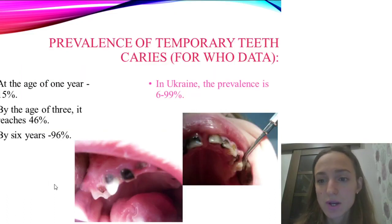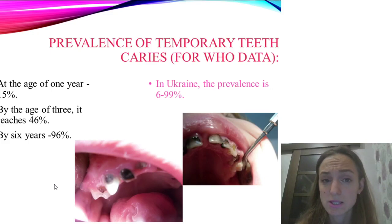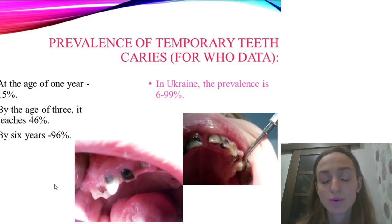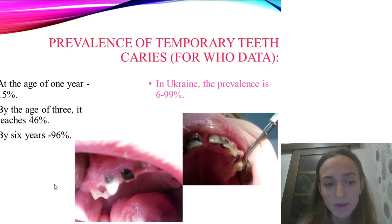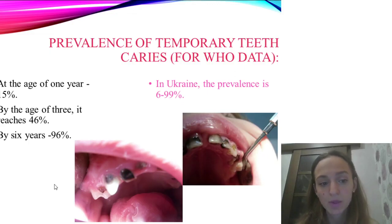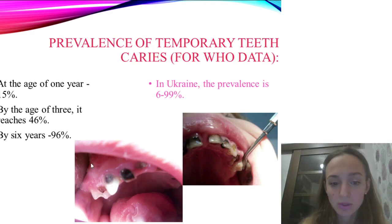The prevalence of temporary caries in Ukraine ranges from 6% to 99% — a very high level. At age one it is 15%, by age three it reaches 46%, and by age six it is 96%. Some clinical cases are shown for illustration.